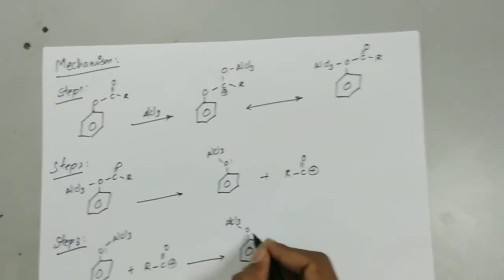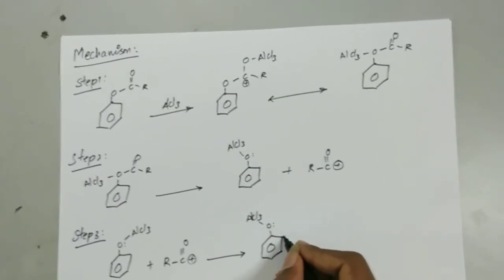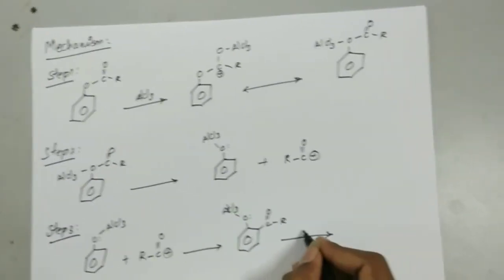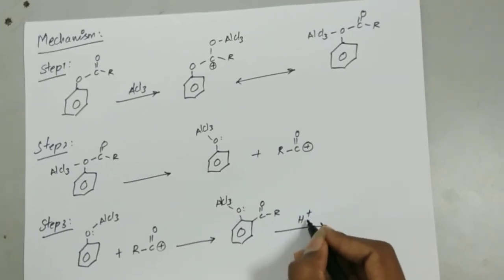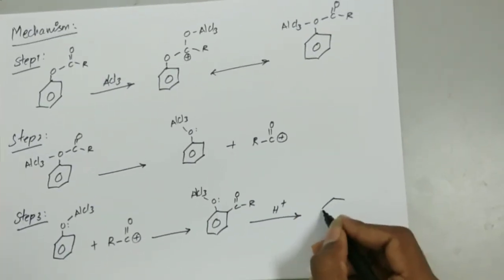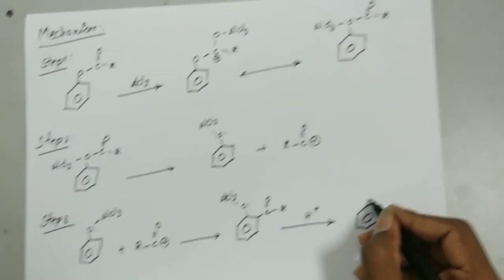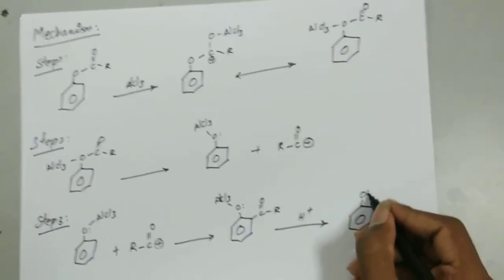The carbocation displaces a hydrogen atom from the benzene ring and places itself in either ortho or para position in the benzene ring. On further hydrolysis, the Lewis Acid is removed from the compound, which results in the formation of the desired product.